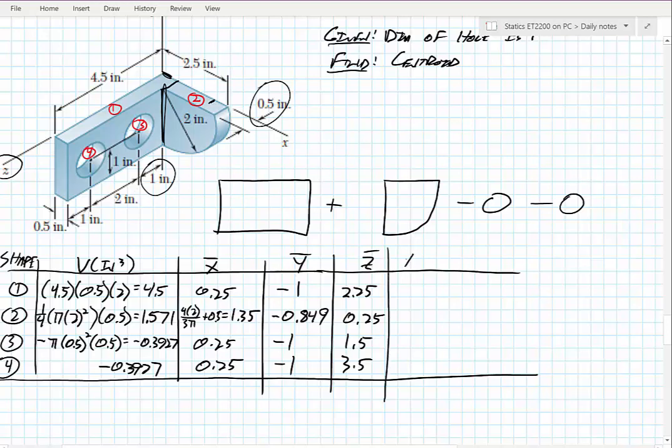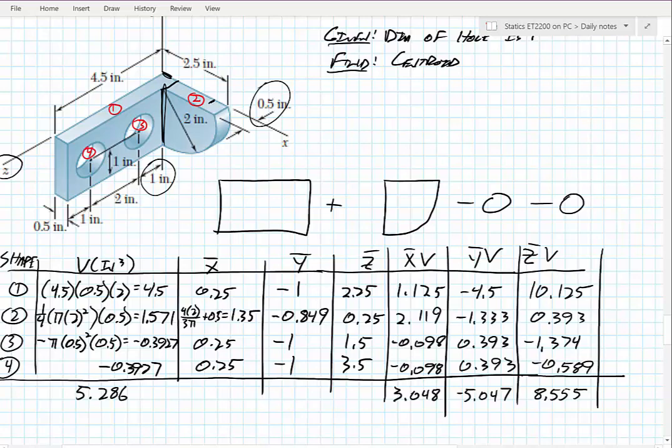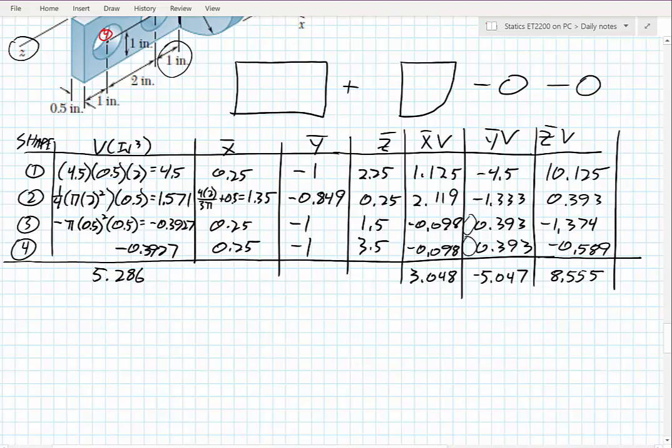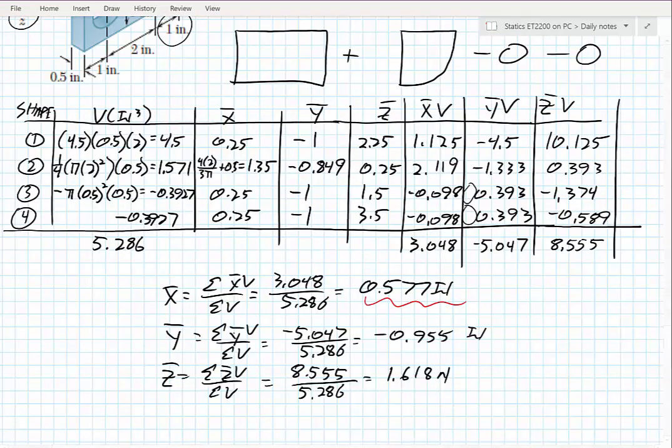So the next step is just to multiply through to get your x-bar volume, y-bar volume, and z-bar volume. So after I multiply all those through and add them all up, also noting that I do have something like my y-bar - these things are two negatives added together, so I end up with a positive. But keeping all my signs straight, I sum up all my values. The last step is just to say my x-bar is equal to the sum of my x-bar volume over the sum of my volumes, or 3.048 over 5.286, giving me some value of 0.577 inches. And it's good to go back and say, does that seem realistic? And it does, and same idea for the y and the z. And after I have my y and my z done, I am done with the problem.